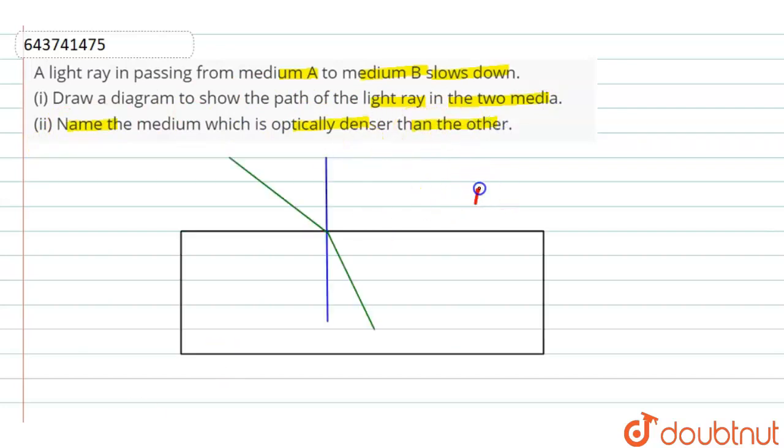So, let us assume this is our medium A and this is our medium B, this is our incident ray. And as it slows down, it means it moves from rarer medium to denser medium.